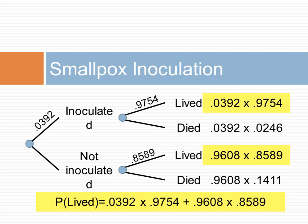If we want to know what percent of the population lived, we need to add all ways in which patients lived, highlighted here in yellow. This is guaranteed by the fact that the events depicted are mutually exclusive.